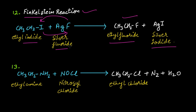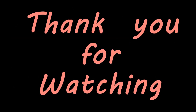The thirteenth method is when ethylamine is treated with nitrosyl chloride, you get ethyl chloride along with N₂ gas and water. So these are the 13 methods of preparation of alkyl halide. That will be it for today's video — thank you for watching.